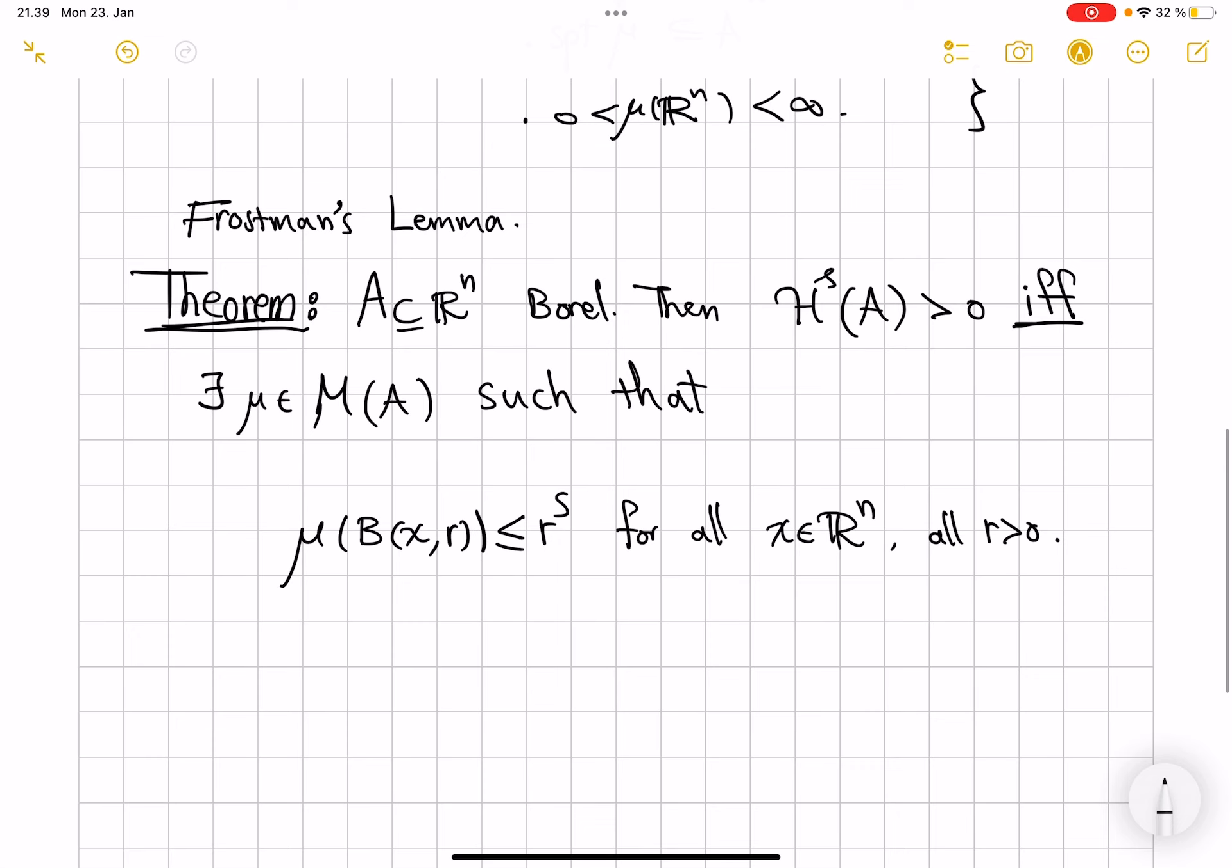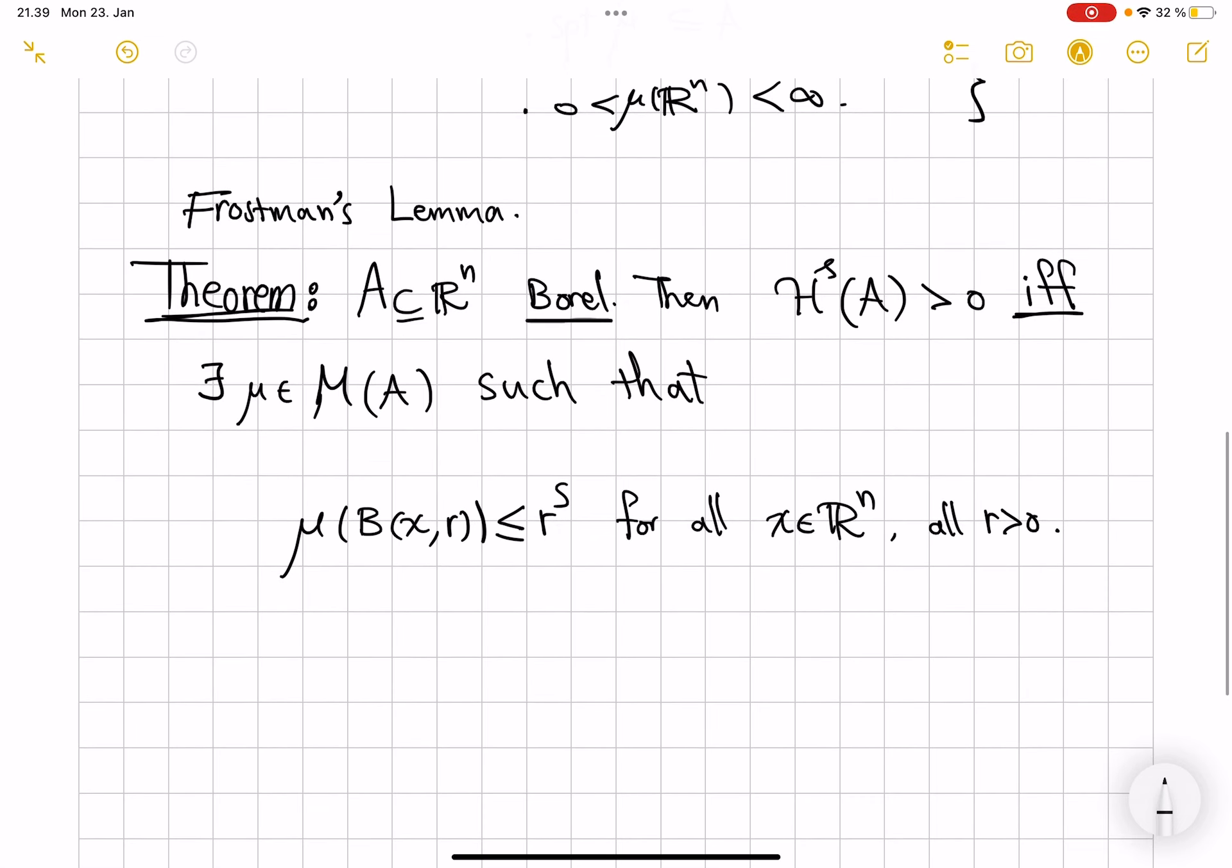What Frostman's lemma remarkably says is that if you have a Borel set, the condition that it has positive s-dimensional Hausdorff measure is equivalent to the fact that there exists one of these measures with this upper Hölder regularity. The measure of balls of radius r is dominated by the s-power of the radius. For all x in R^n and for all r positive.